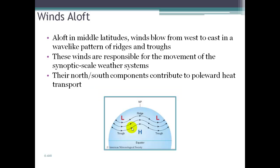In middle latitudes, away from the equator and away from the pole, we have winds blowing from west to east in a wave-like pattern of ridges and troughs — what we'll see is the jet stream. This is where the polar lows meet the subtropical high. The strong difference between cold polar air and warm tropical air causes very strong pressure gradients and a flow pattern responsible for moving a lot of the weather through the middle latitudes. This clash of air masses creates the formula for weather, with poleward transport of warm air and cold air making its way back down south.